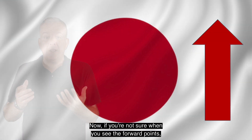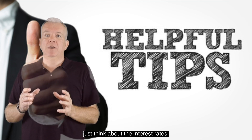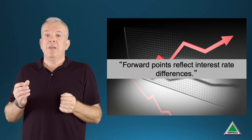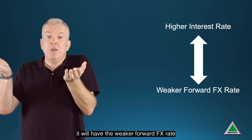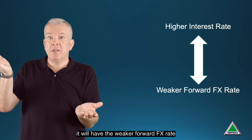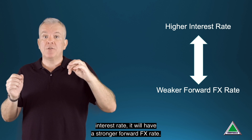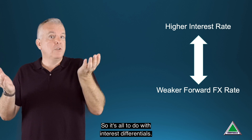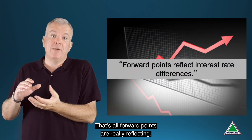If you're not sure when you see the forward points whether you should be adding or subtracting them, just think about the interest rates. Look at the interest rate on the variable currency. If the variable currency has the higher interest rate, it will have the weaker forward FX rate. And likewise, if the variable currency has a lower interest rate, it will have a stronger forward FX rate. It's all to do with interest differentials — that's all forward points are really reflecting.